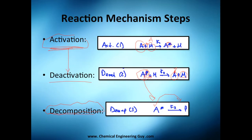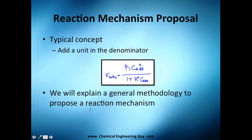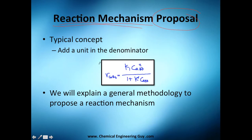Now we're going to start proposing reaction mechanisms, with some rules — thumb rules or general rules. You cannot propose a mechanism just because you want to; you need a set of rules, because this is actually extremely complex chemistry kinetics.